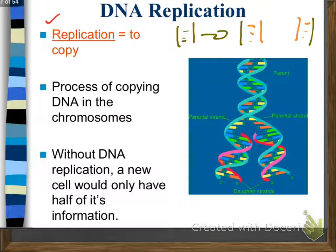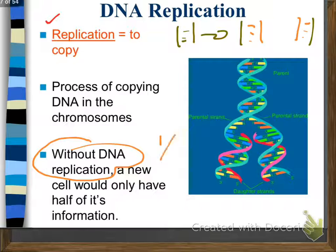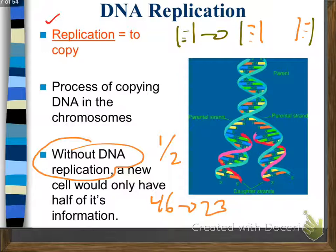What's important to note is that without this replication, we'd keep cutting the number of chromosomes in half. For humans, we'd start off at 46, then end up with 23, and it keeps going until we whittle down to absolutely nothing. For our lives to keep going, we need to have an equal number of chromosomes.